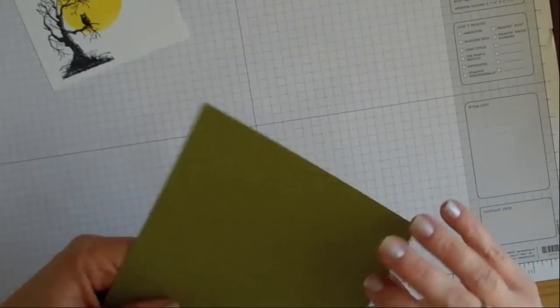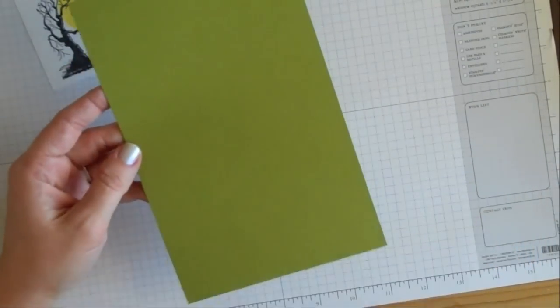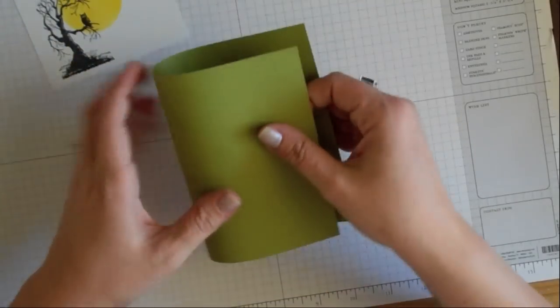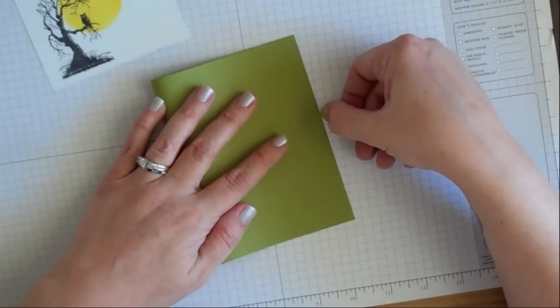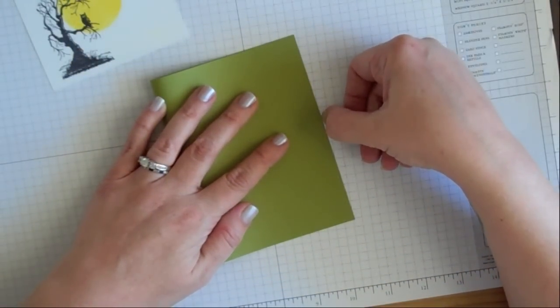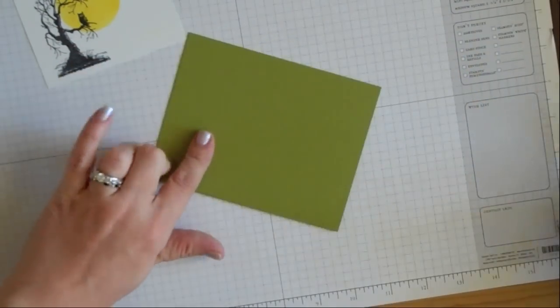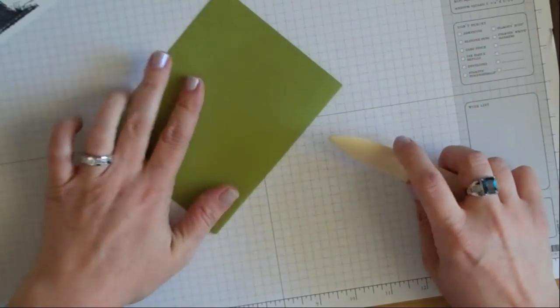We're going to take a regular 8.5 by 11 sheet of cardstock. This is Old Olive and I cut it in half. I'm just going to fold it in half again to make my card base. This is your standard A2 size card, which is 4 and a quarter by 5 and a half.